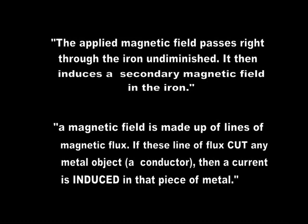The applied magnetic field passes right through the iron undiminished. It then induces a secondary magnetic field in the iron. A magnetic field is made up of lines of magnetic flux. If these lines of flux cut any metal object, a conductor, then a current is induced in that piece of metal.